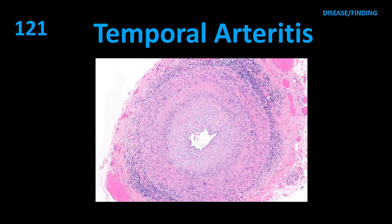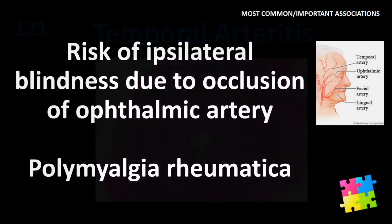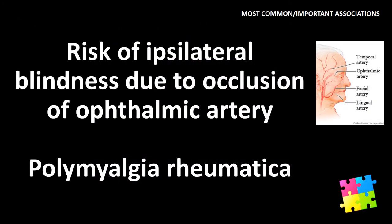Item 121: Temporal arteritis — risk of ipsilateral blindness due to occlusion of the ophthalmic artery. Associated with polymyalgia rheumatica.